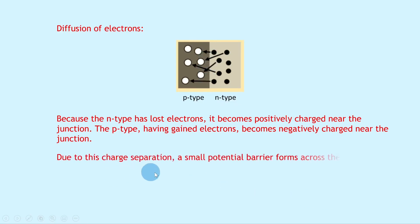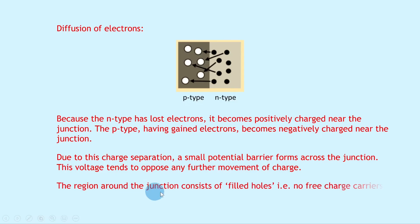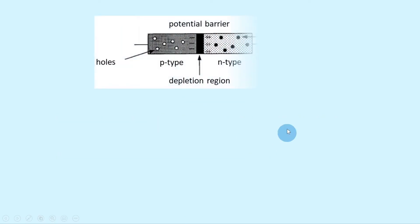Due to this charge separation, a small potential barrier forms across the junction. Because we've now got two oppositely charged regions, that creates an electric field which in turn creates a voltage or potential difference, and this voltage tends to oppose any further movement of charge. The region around the junction consists of filled holes — i.e. no free charge carriers — and this region is called the depletion region. Here's our final sketch: we've got our N-type on the right, our P-type on the left, and the depletion region in the middle — the potential barrier where no free charge carriers can move across.